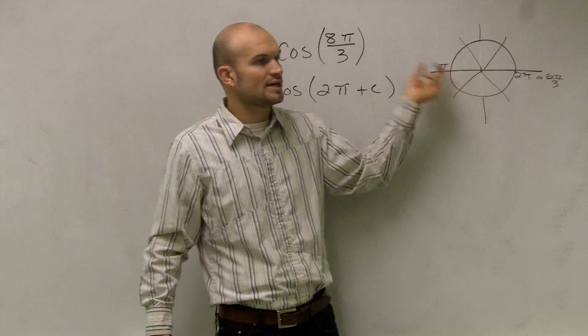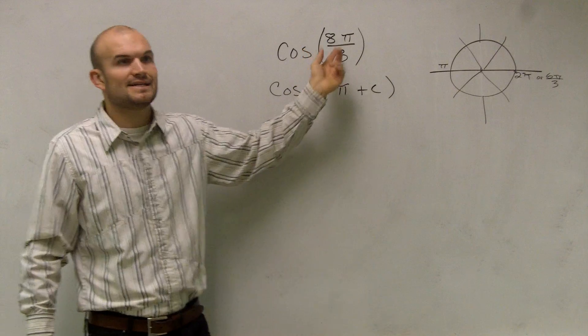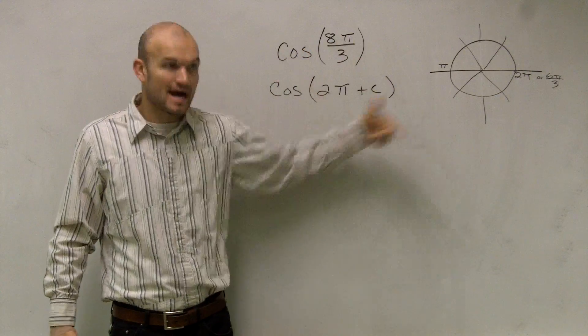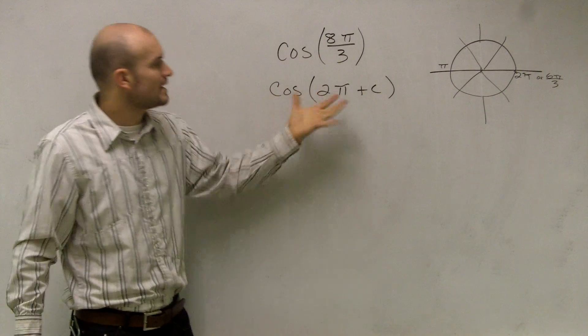So we don't always have to include counting around because, you know, what if this was 186π over 3, right? That's a lot of revolutions before we actually find where our angle is going to end.